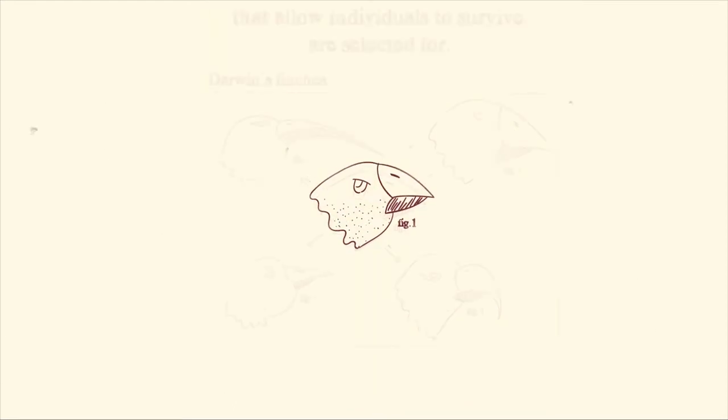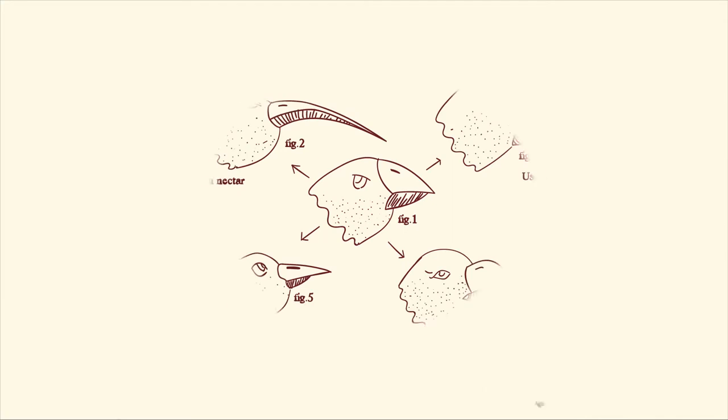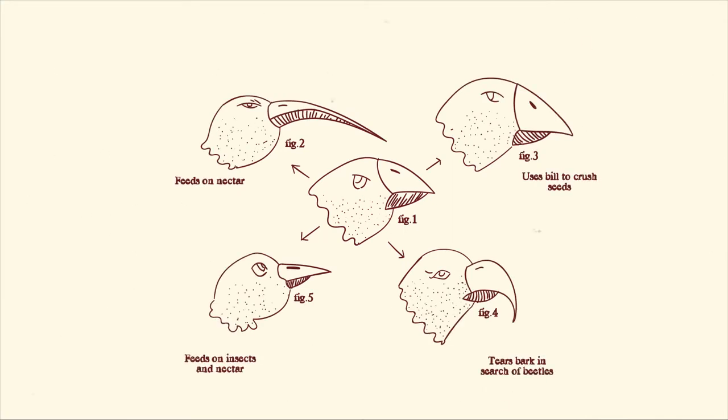What Darwin realized was the importance of the fact in any population of living organisms there already exists variation in any given characteristic. As a result, he argued, nature would favor, or select, the fittest variants. This is natural selection.